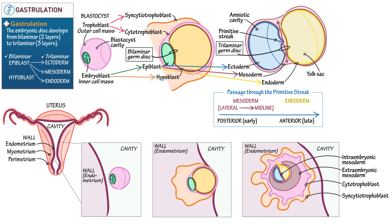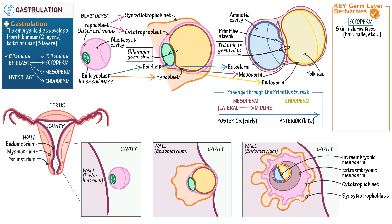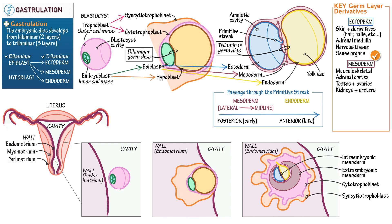Finally, let's list key germ layer derivatives — note this list is not comprehensive. Ectoderm derives skin and its derivatives (hair, nails, etc.), the adrenal medulla, nervous system tissue, and sense organs. Mesoderm derives musculoskeletal tissues, the adrenal cortex, testes and ovaries, kidneys and ureters, and other organs. Endoderm provides the epithelial lining of the gastrointestinal, respiratory, urinary, and reproductive systems. This concludes our diagram.